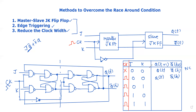Now we look at the characteristic table of the Master-Slave JK flip-flop. The behavior depends on the clock — the clock is either 0 or 1. When the clock is 0, the JK values are not used and the circuit provides the previous state output, meaning the next state equals the previous state.